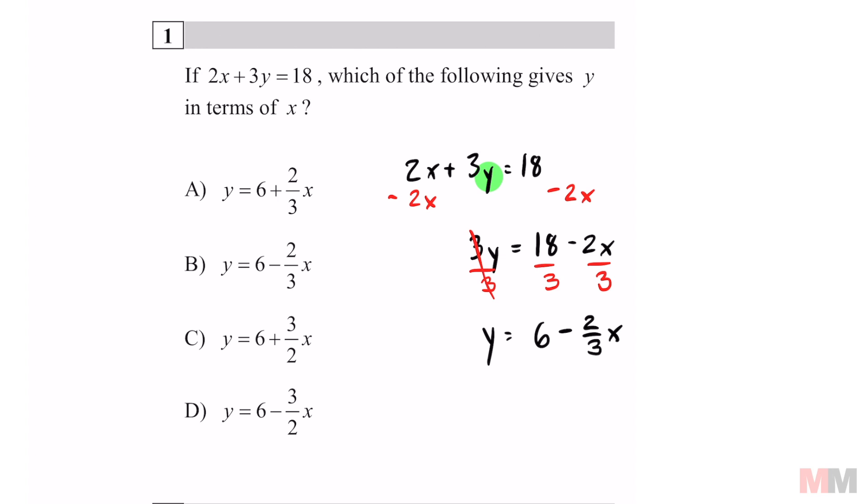Look at your answer choices. Make sure you look at this negative sign in the middle so you don't pick the wrong one and that will be letter B. Moving on.